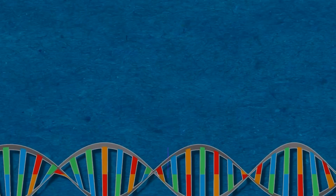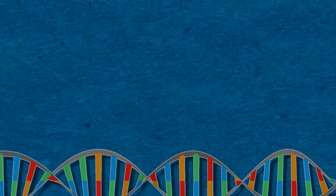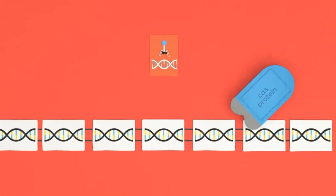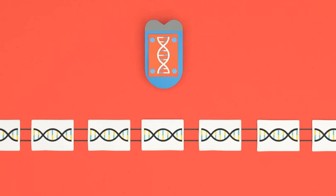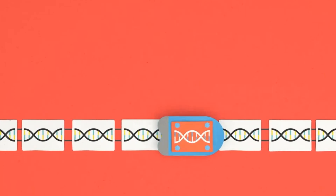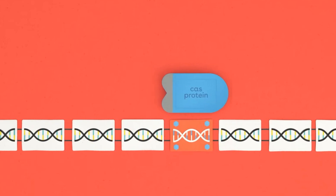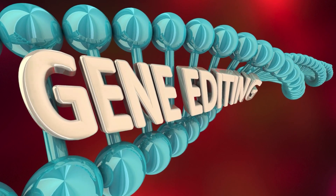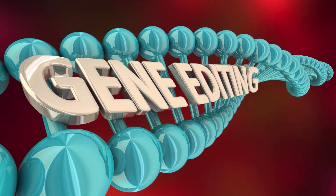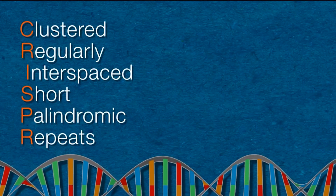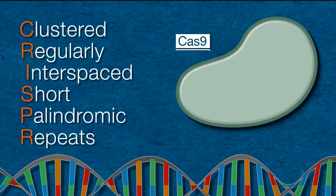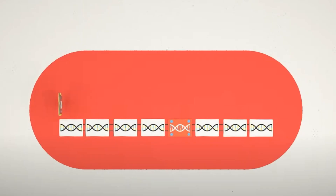CRISPR — Clustered Regularly Interspaced Short Palindromic Repeats — technology is a revolutionary gene editing tool that has transformed the field of genetics and biotechnology. It enables precise and targeted modification of an organism's genetic material, including the human genome. CRISPR technology has garnered significant attention for its potential to treat genetic diseases, develop novel therapies, and explore fundamental aspects of biology.